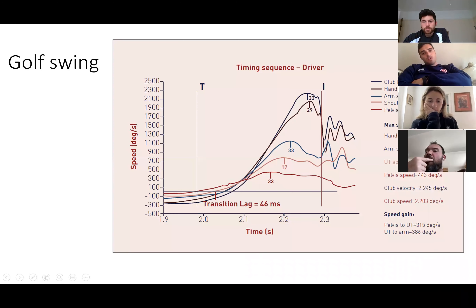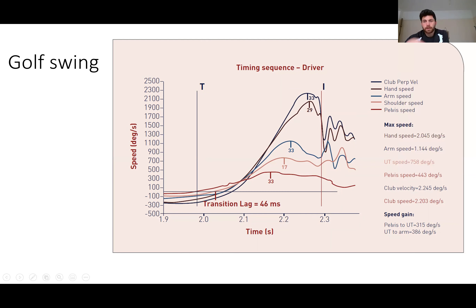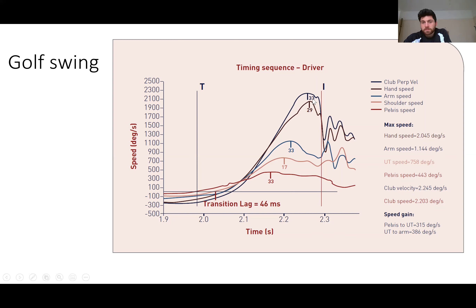The hips start the kinematic sequence, then the shoulders, then the elbow, then the wrist — demonstrated in golf. At 33 degrees, the pelvis speed is at its fastest, then decelerates and allows the shoulder to come through at its fastest speed, which decelerates and lets the arm come through at its top speed, and then the hand and club speed come through fastest after that. There's a very clear sequence of events.